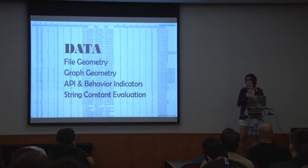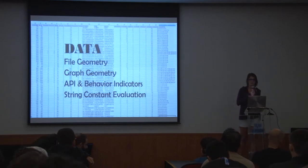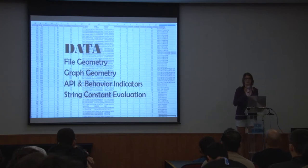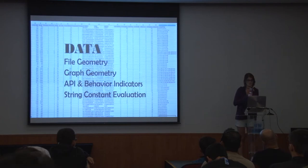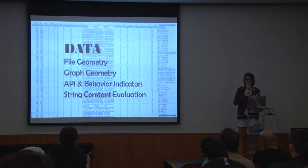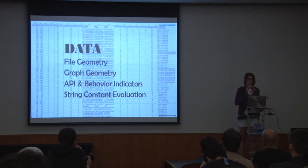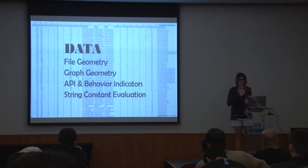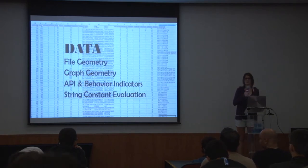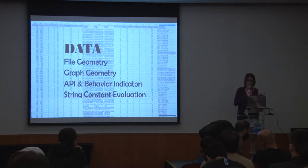So what we tried to come up with were smarter indicators that were more resilient to little changes in files and more adaptive to how threats change over time. We built metrics out of file geometry and graph geometry. We tried to engineer metrics out of APIs found in binaries, out of behavior gadgets found within the API structure, and we also built metrics around strings found in binaries. This is all formal research that was published about half a year ago — you can look it up on my GitHub — and hopefully it will sooner or later be incorporated into the MISP sharing platform.